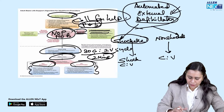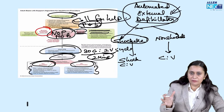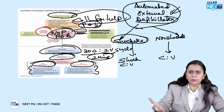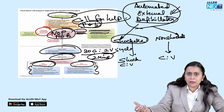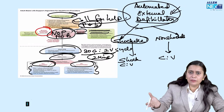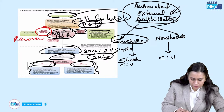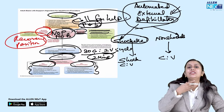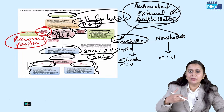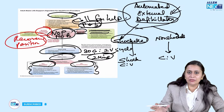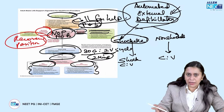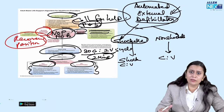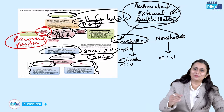The third scenario: patient is unresponsive but has normal breathing and pulse. In this case, we assess why the person is unresponsive. Before assessment, we place the person in the recovery position — the lateral position with neck extended — to prevent aspiration. To summarize the three scenarios: cardiac arrest requires high quality chest compression; respiratory arrest requires rescue breaths; unresponsive with normal pulse and breathing requires recovery position.